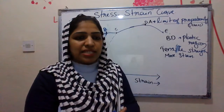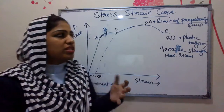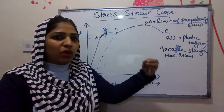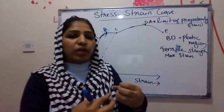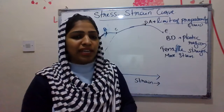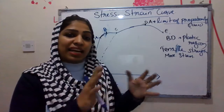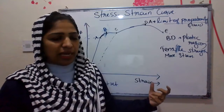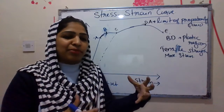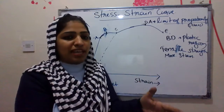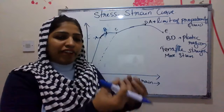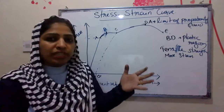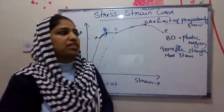Beyond point D, even if we start decreasing or removing the applied force, the wire will get elongated like a liquid — it will flow as a liquid. The molecules move far apart and the material loses its solid nature. From D to E, the material continues to elongate even without additional force, until it breaks into pieces.